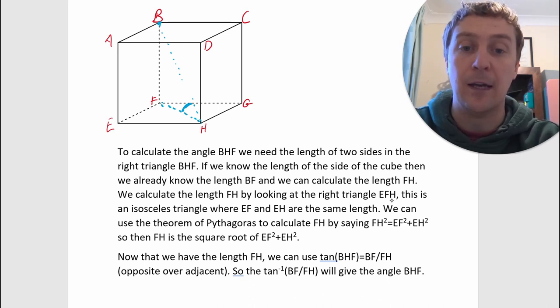We can then use the theorem of Pythagoras to calculate FH by saying FH squared is equal to EF squared plus EH squared. So then FH is the square root of EF squared plus EH squared.